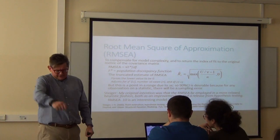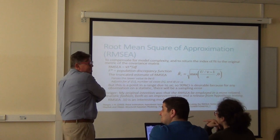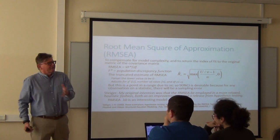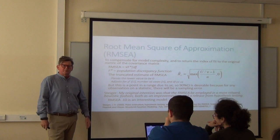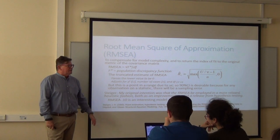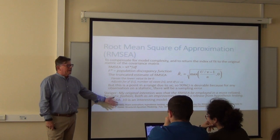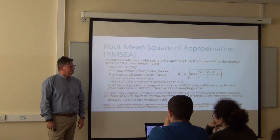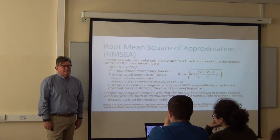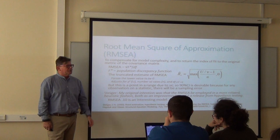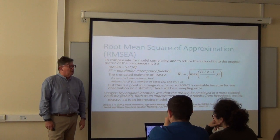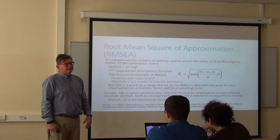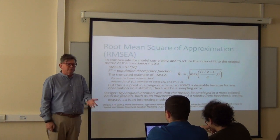Most journal editors go, 'oh, that's far too high — reject.' So the guy who invented it said up to 0.10 could be really interesting, but the guys who edit and control the journals say, 'no, that's unacceptable. Give me 0.06, 0.05. I want a small number, not a big number.' Even though the guy who invented it said this could be really interesting.